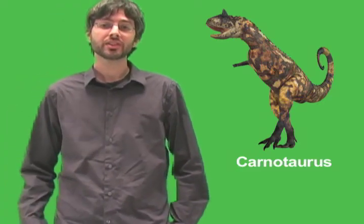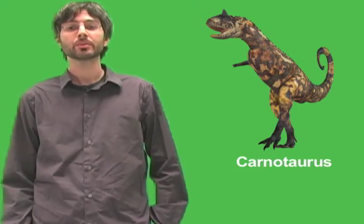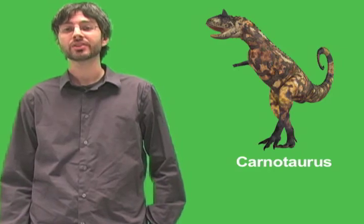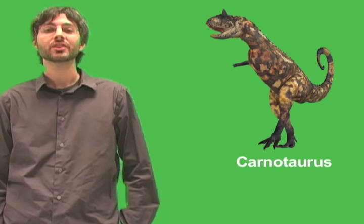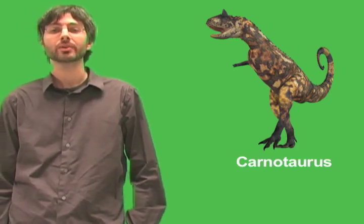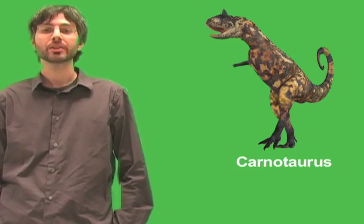One Carnotaurus fossil was an especially fortunate discovery. It was so well preserved that researchers were able to recover detailed impressions of its skin. Skin impressions of meat-eating dinosaurs, such as Carnotaurus, are extremely rare. Researchers were able to determine that Carnotaurus did not have feathers, as many other theropod dinosaurs had. Instead, its skin was covered with non-overlapping disc-like scales.